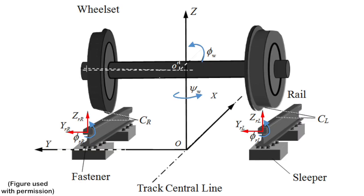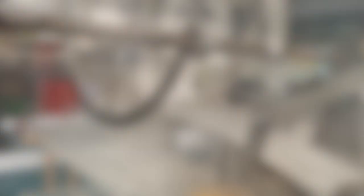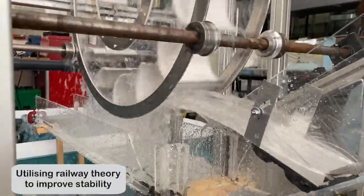Railway theory was utilized to improve friction and stability between the wheel and rollers. Both parts were made from aluminum to reduce wear and increase friction. The rollers and outer rim of the wheel were altered to mimic a train wheel and track to improve stability during rotation.